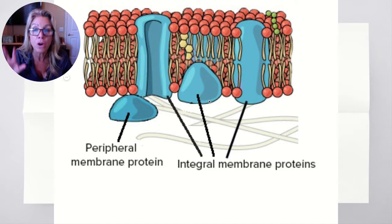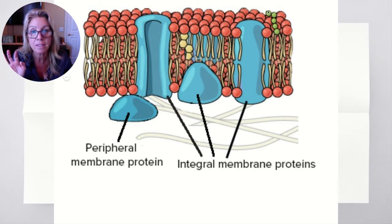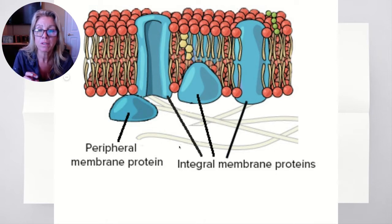Notice how I could tell whether it was inside the cell or outside the cell. One thing I used was the glycolipid — I know it's attached to a lipid. Also, the interior is where the cytoskeleton would be, and I can see that right here.